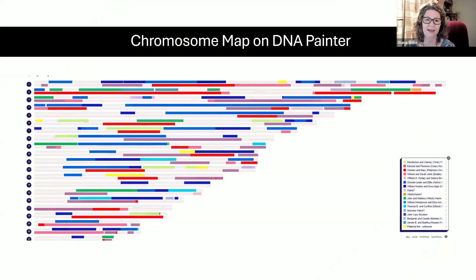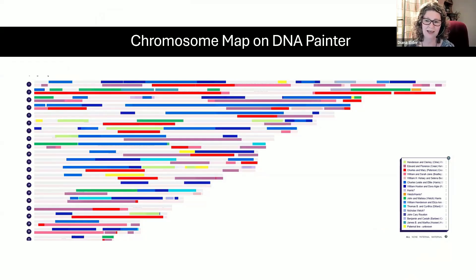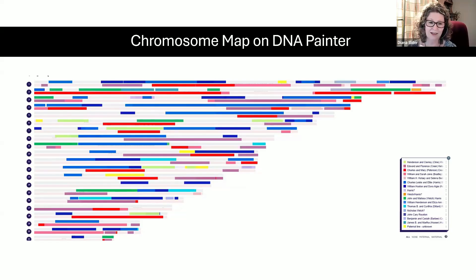If you are unfamiliar with chromosome maps, here's my chromosome map. You can see we have all sorts of different colors here. Each one of these colored bars represents a DNA match to me and a segment on my genome that we share with an ancestral couple. I've identified several ancestral couples over on the right and given them a color. My goal is to eventually fill up this map with all the colors — right now I'm at about 49%.